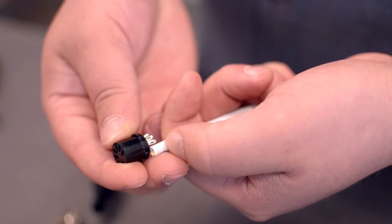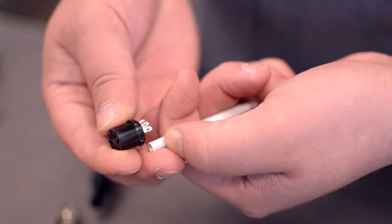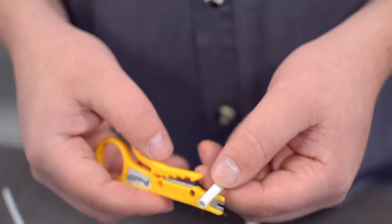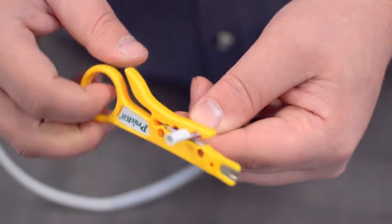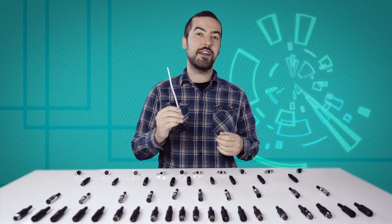Measure how far you will need to strip back the jacket by holding the cable up against the base of the connector. Then strip the cable jacket using the wire strippers. For this example, we will be using CAT5E cable.